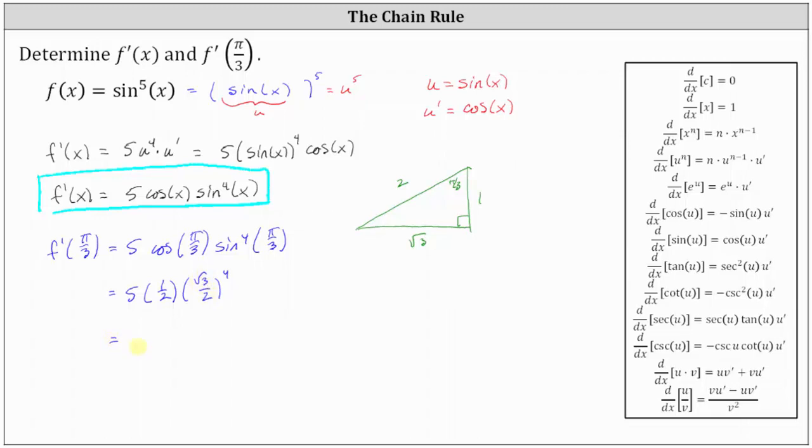Simplifying here, we have five times one half times, the fourth power of the square root of three is equal to nine, and the fourth power of two is equal to 16. So the fourth power of square root of three divided by two is equal to nine sixteenths.